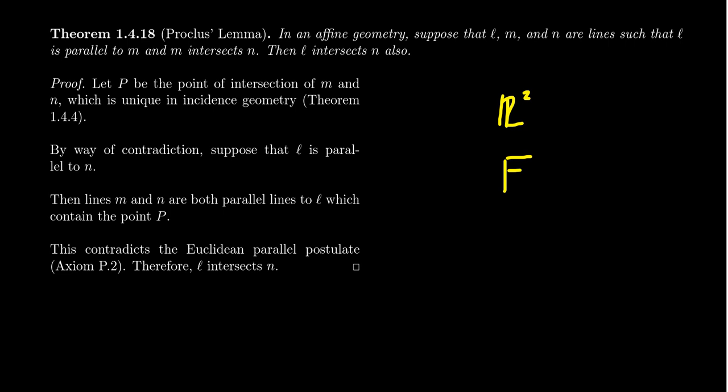If you take the square of a field, you can actually make an affine plane with it. Essentially every two-dimensional vector space is an affine plane, and higher dimensions are affine geometries as well. In this lecture series, we'll look only at planar geometry.